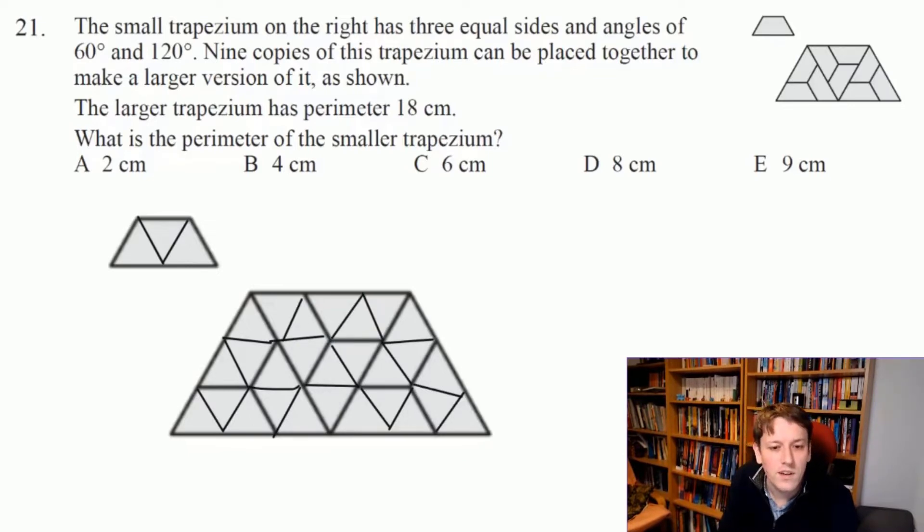If I look at the perimeter of the big trapezium now, each of these individual sides of an equilateral triangle I could call x, and just count how many of those I've got as I go around. So I've got 1, 2, 3, 4, 5, 6, 7, 8, 9, 10, 11, 12, 13, 14, 15.